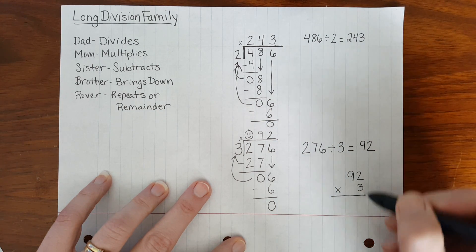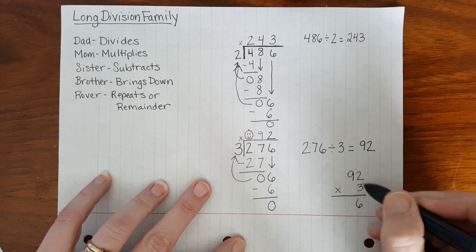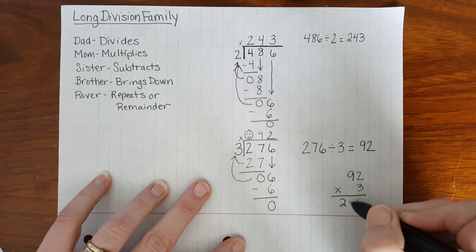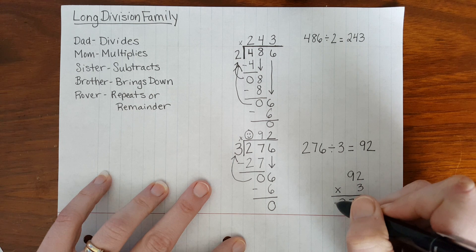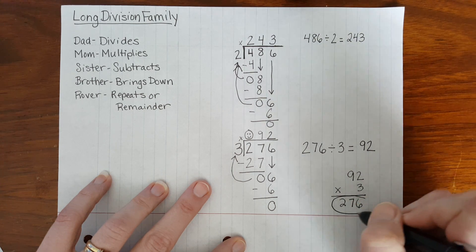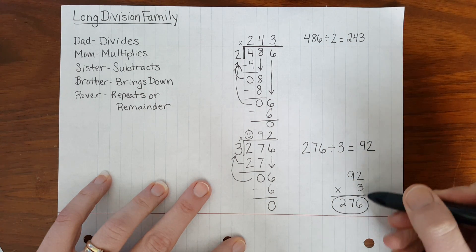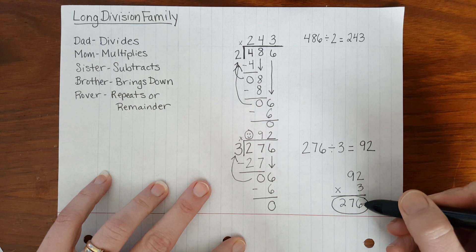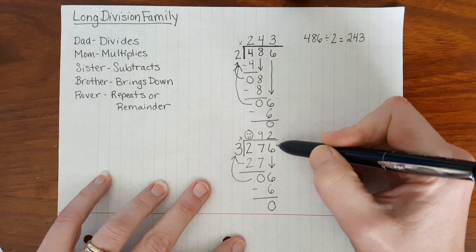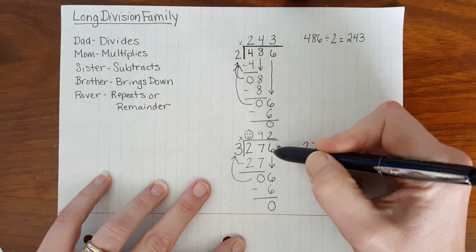We know 3 times 2 is 6, and we know 3 times 9 is 27. Therefore, our answer or product to this multiplication problem double-checks and matches up with our quotient.